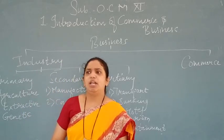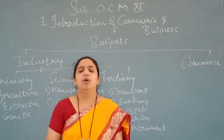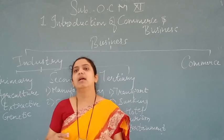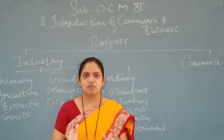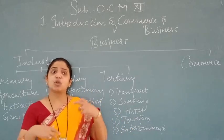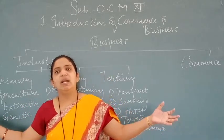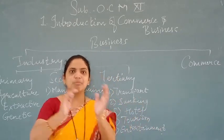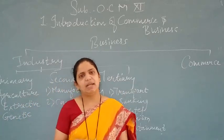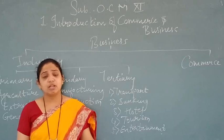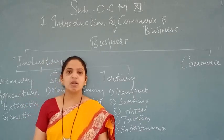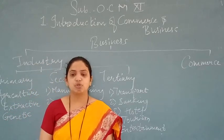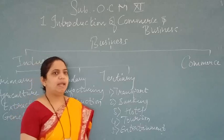Industry involves production and processing of goods, mining, breeding and rearing of animals. For example, from milk you can make cheese, paneer, and butter. At the same time, production and processing are done. The goods purchased may be consumer goods, which are directly consumed by final consumers, or capital goods, which are used by another industry for further production.